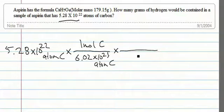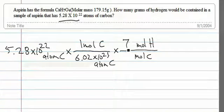Now we want to go from moles of carbon to moles of hydrogen. We use the mole ratio that's found in the formula where you see 7 moles of hydrogen for every 9 moles of carbon.